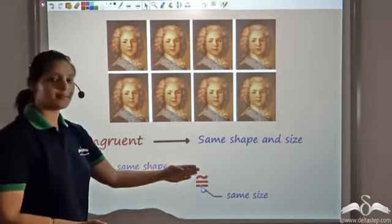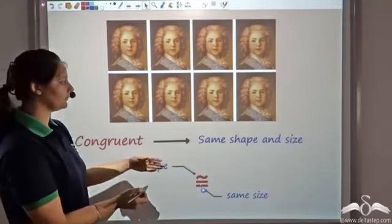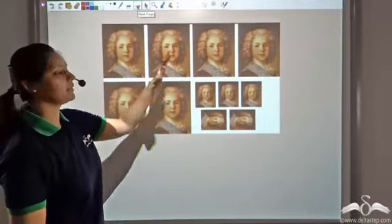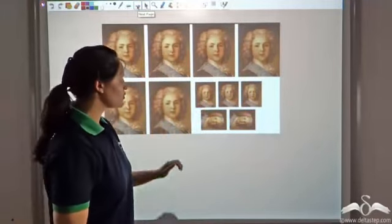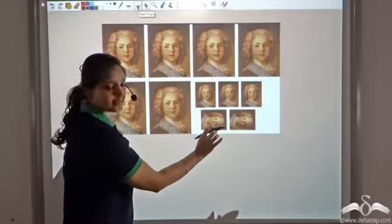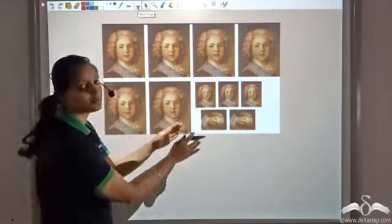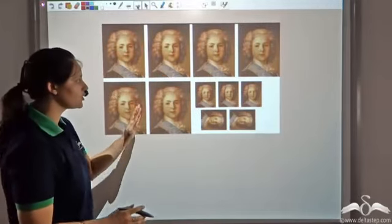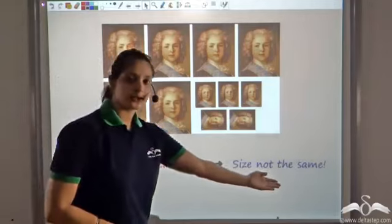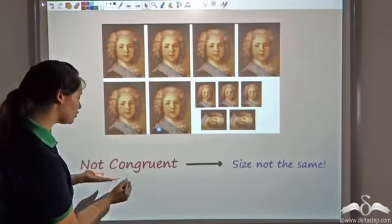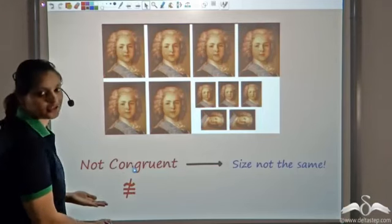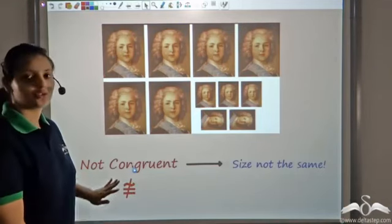Now let us say you asked for some stamp size photos too along with the passport size photos. Are these congruent? Clearly there is a difference in size — the stamp size photos are much smaller than the passport size photos, and hence they are not congruent because the size is not the same. To show not congruent, I put the congruent sign and slash it above.